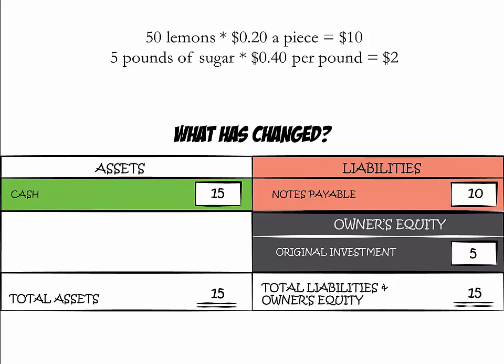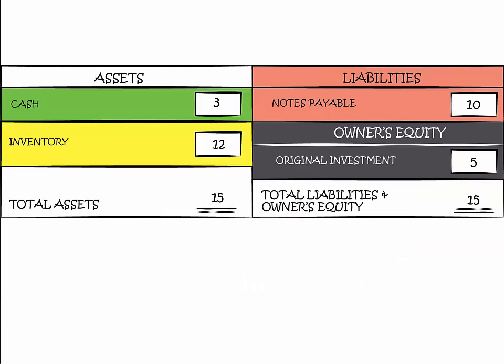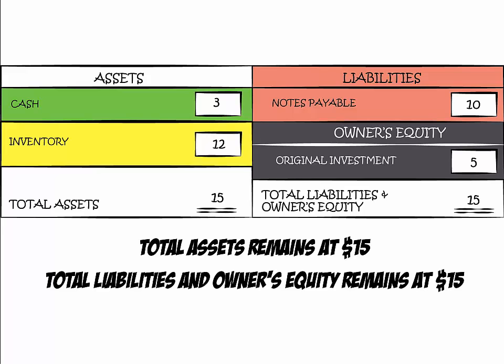Please note that we are now out of balance, with only $3 on the left side of our balance sheet and $15 on the right side. The $12 in value didn't just disappear. So how can we rebalance our balance sheet? We need to add a new category under Assets — inventory. We now have $12 worth of inventory. Cash has gone down from $15 to $3, and the new inventory category is valued at $12. Total Assets remains at $15, and total Liabilities and Owner's Equity also remains at $15.